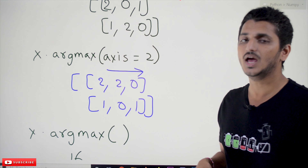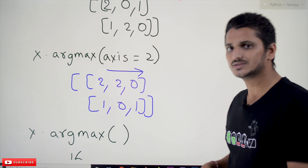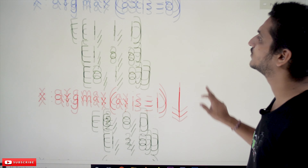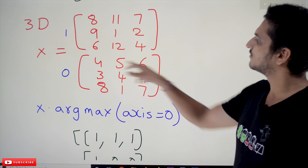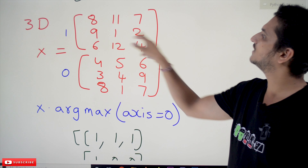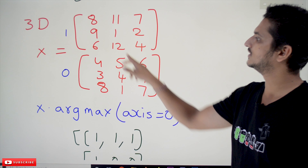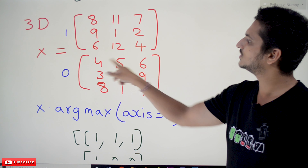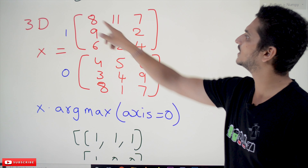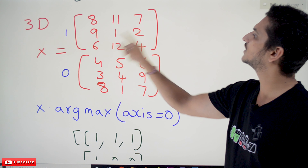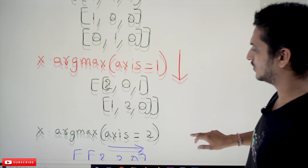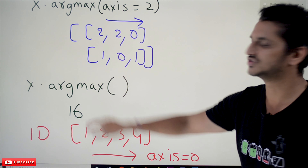If you don't mention any axis for the three-dimensional array, it takes all elements in sequence: 4,5,6,3,4,9,8,1,7,8,11,7,9,1,2,6,12,4. The indexes run from 0 to 16. The maximum value is 12, which is at index 16. So the output is 16.